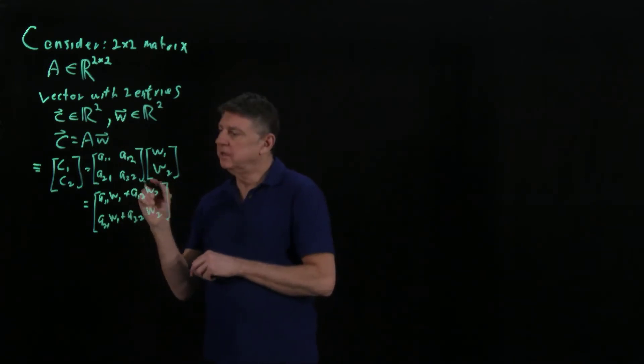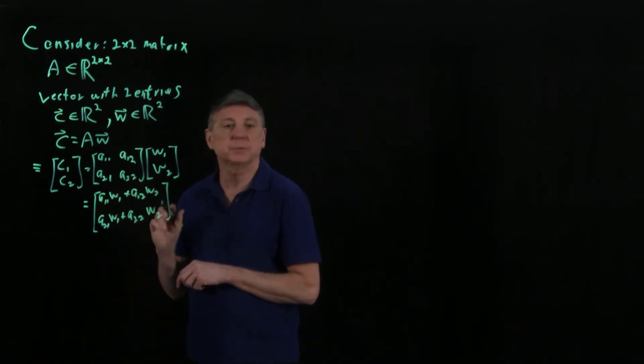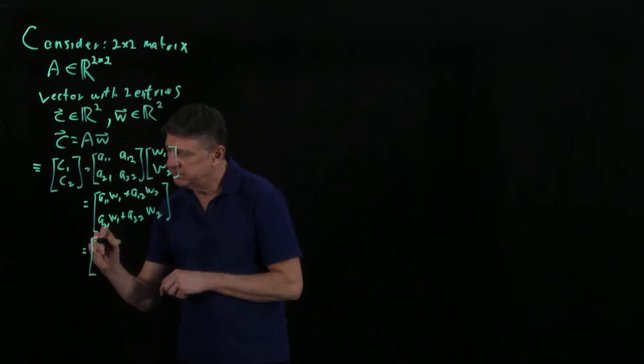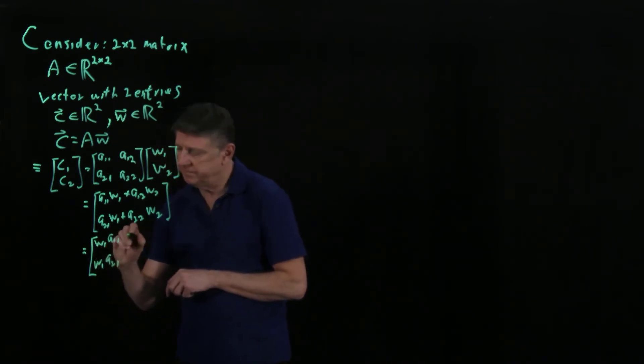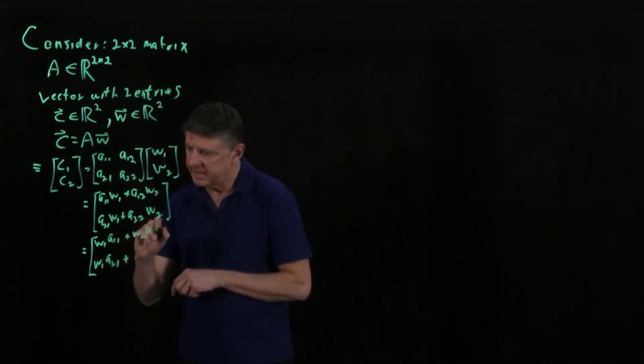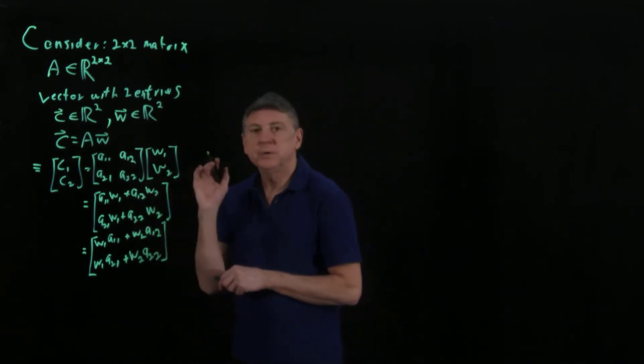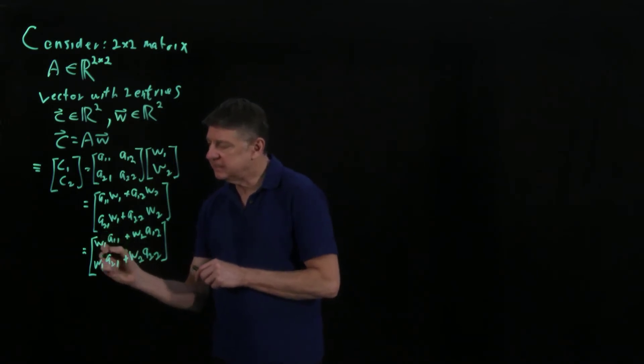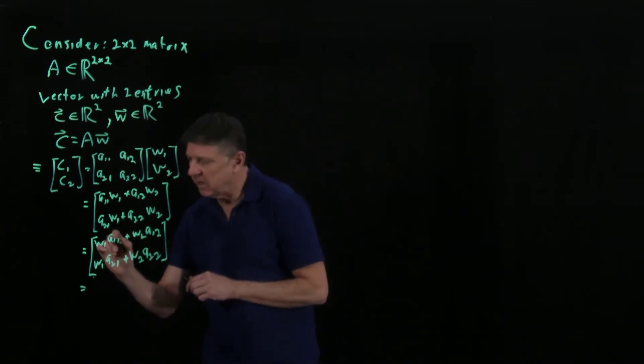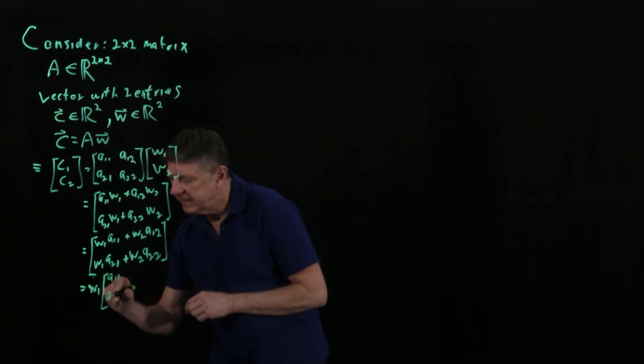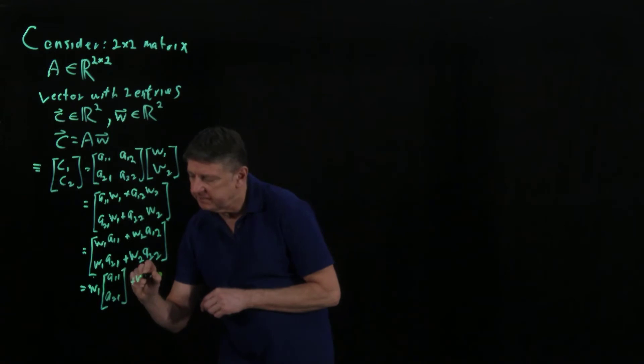And we could equally well put these Ws at the start because the multiplication of two real numbers is commutative, meaning we can switch them. So that would also be equal, we could write it as W1 times A11, W1 times A21 plus W2, A12, W2, A22. And by doing it in that order, what we're doing is we're drawing our attention to the fact that this is the same as saying that this is, now I can factor that W1 out, and I can say that's W1 times A11, A21 plus, and I can factor this out and make that W2 times A21, A22.